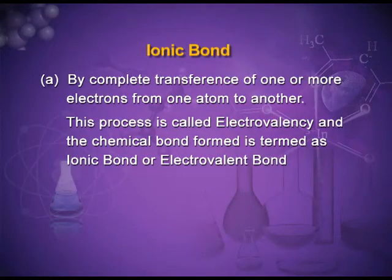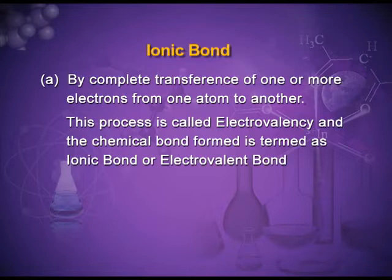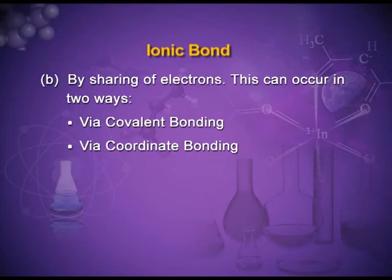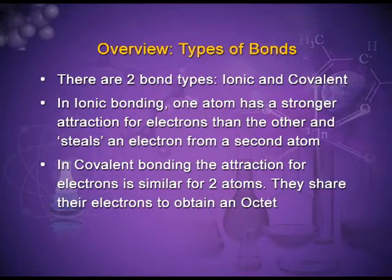Ionic bond is formed by the complete transference of one or more electrons from one atom to another. This process is called electrovalency and the chemical bond formed is termed the ionic bond or electrovalent bond. By sharing of electrons, a covalent bond is formed. When one electron each is shared it is a normal covalent bond, but in a special type of sharing when both electrons are contributed by one atom, it is a coordinate bond — a special type of covalent bond.